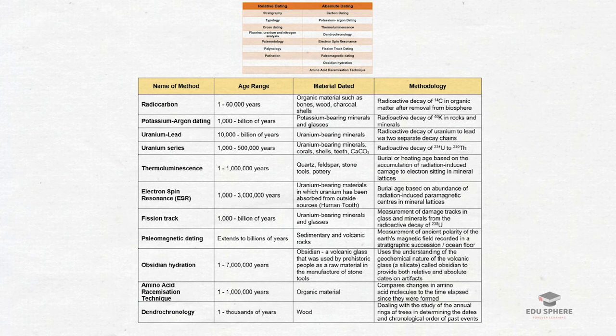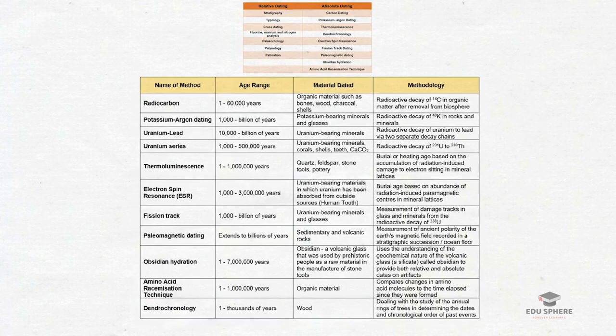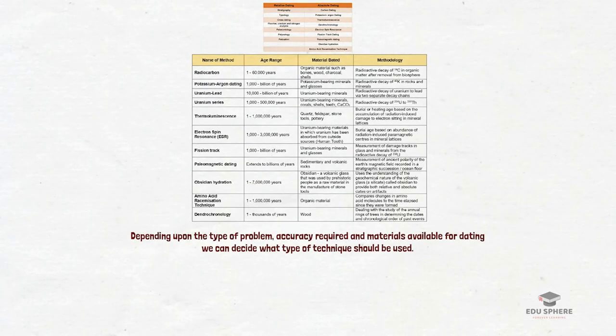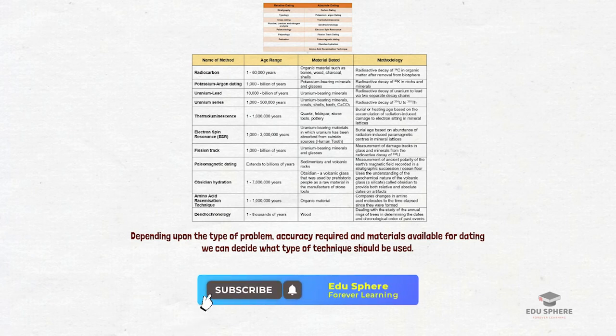In applying all these dating methods to a particular site, it is important to consider the purpose and limitation of each of these dating methods. Depending upon the type of problem, accuracy required, and the materials available for dating, we can decide what type of technique one should use for a particular place. All dating techniques have their merits and demerits. So it is quite essential to apply different dating methods for a particular object in order to cross check the results and to build a concrete chronology.